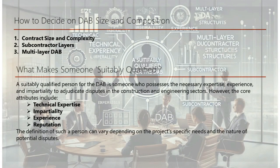DAB size and composition depend on contract size and complexity. For smaller contracts, a one-person DAB is often sufficient, while in the European community, three-person DABs are standard. Mega projects or those with significant technical complexity may require a five-person panel. Projects with multiple subcontractor layers might benefit from a common DAB or an interlocking DAB member who participates in several boards within the project.